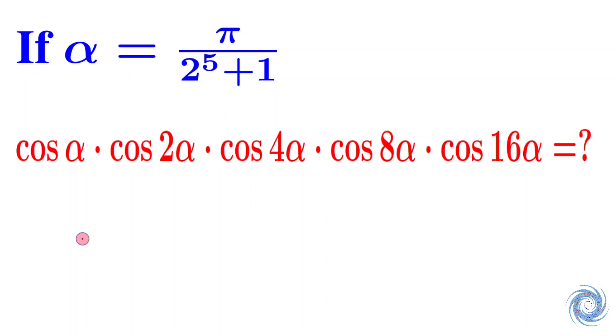Hello everyone, welcome to the family of Atomic Mathematics. In this video we are going to solve a problem from trigonometry. The question is: if alpha equals pi over 2 to the power 5 plus 1, then find the value of cos alpha times cos 2 alpha times cos 4 alpha times cos 8 alpha times cos 16 alpha.